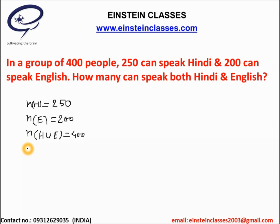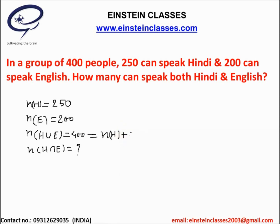We have to find the number of elements in the set containing people who are speaking both Hindi and English — that means set H intersection E. Using the same formula as the previous problem, H union E equals the number of elements in H plus the number of elements in E minus the number of elements in H intersection E. We can put the value 250 for H and 200 for E.